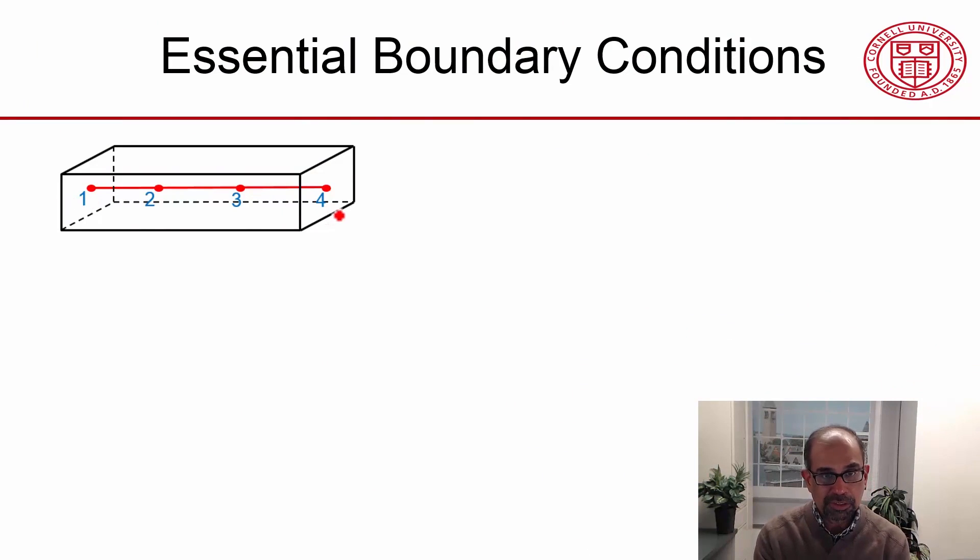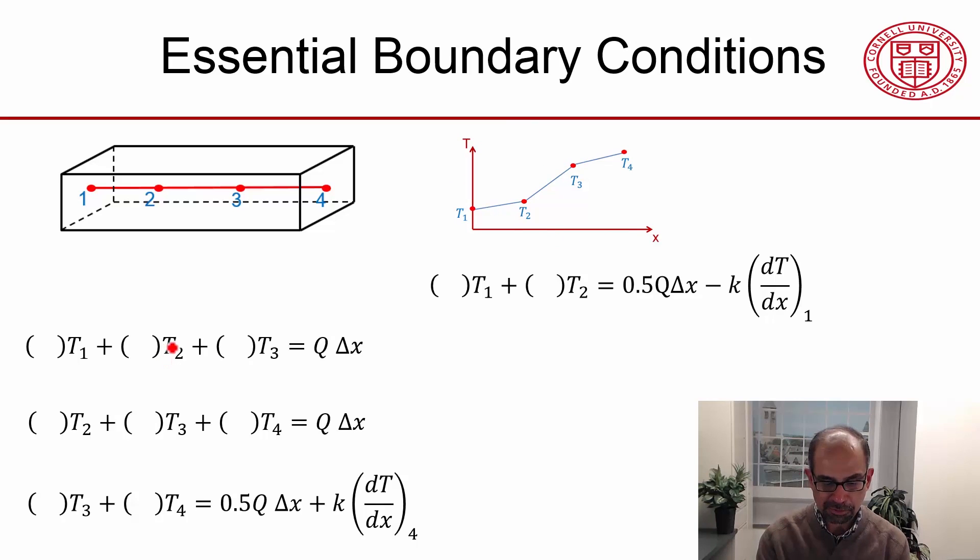We have our four nodes arranged along a line, shown within the context of the bar, and this is the assumed shape for our temperature. We have four algebraic equations here relating temperatures at neighboring nodes.